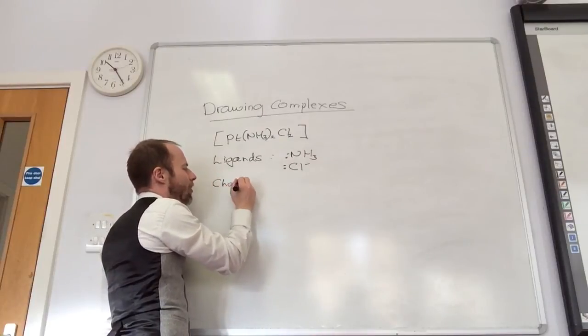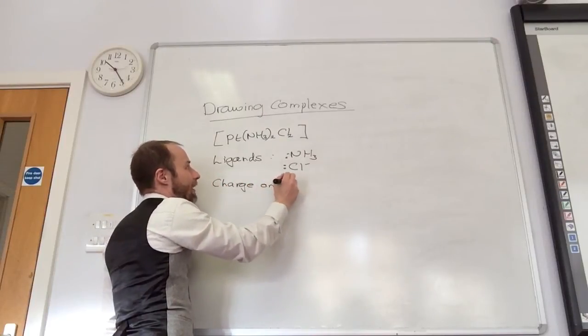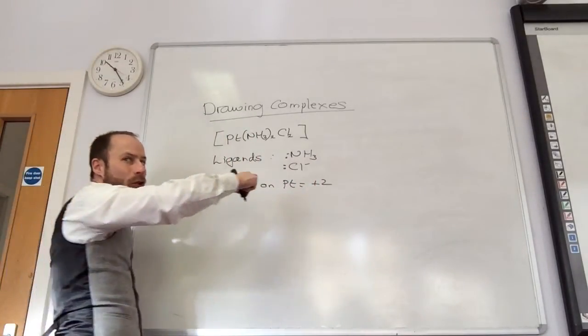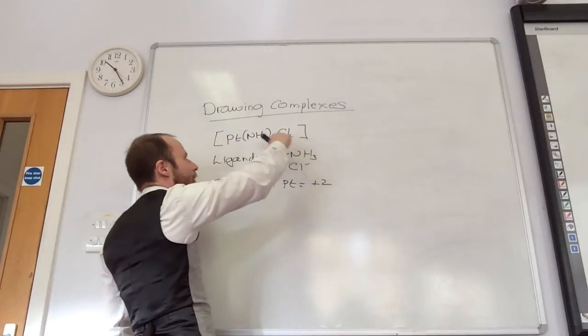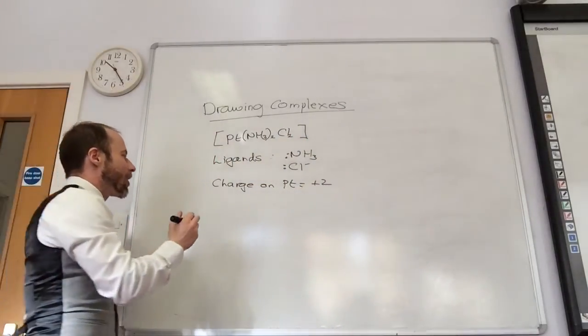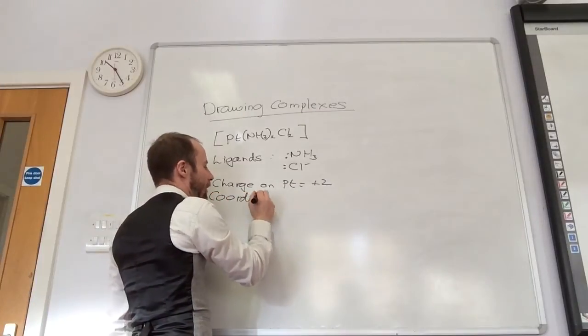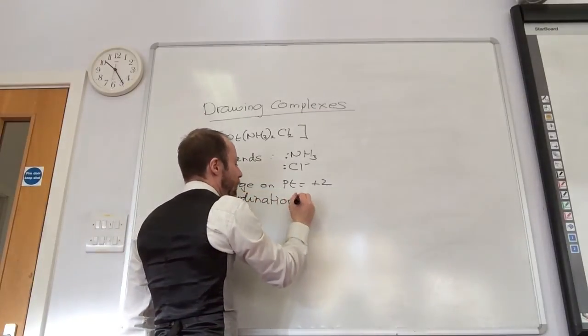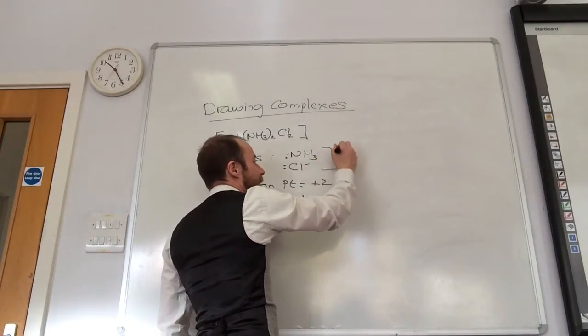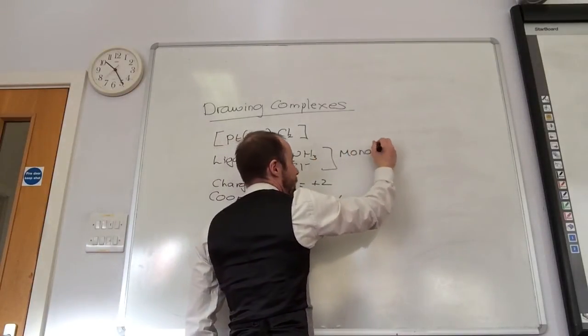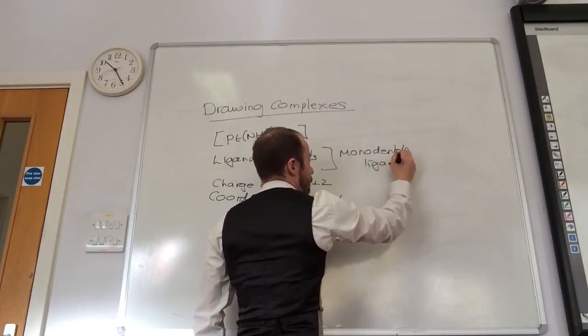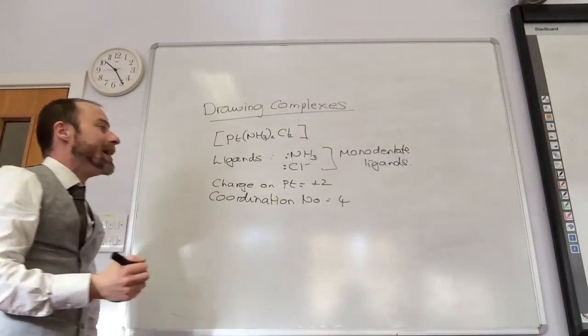The overall thing doesn't have a charge. So, what is the charge on platinum? Two plus. Ah, yeah. Plus two. Because each chloride is minus, I've got two of them. So, platinum must be plus two. How many coordination? What is my coordination number? Yeah, brilliant.